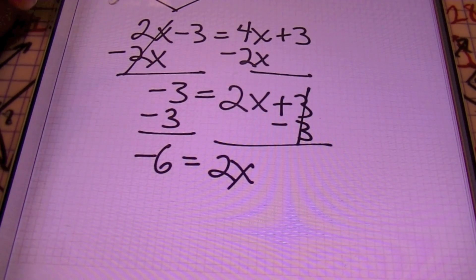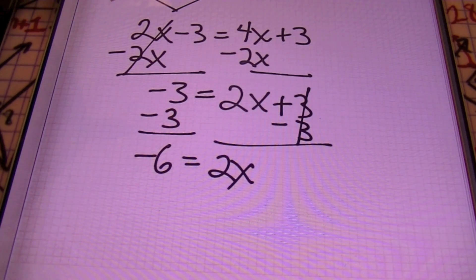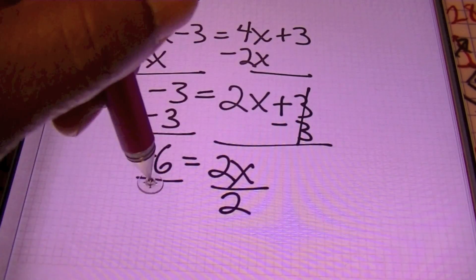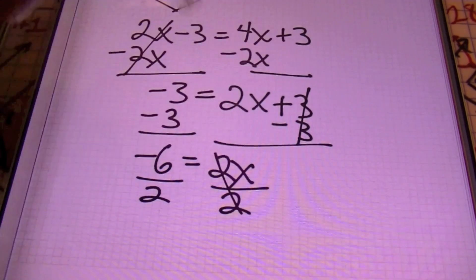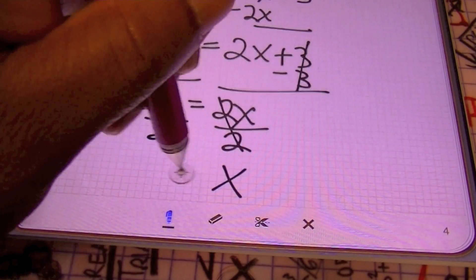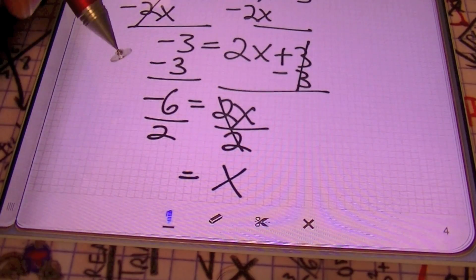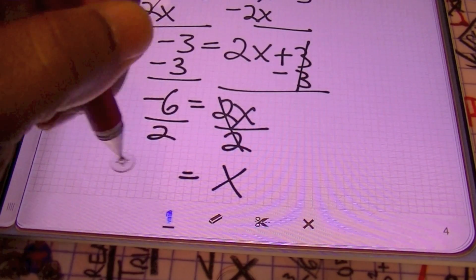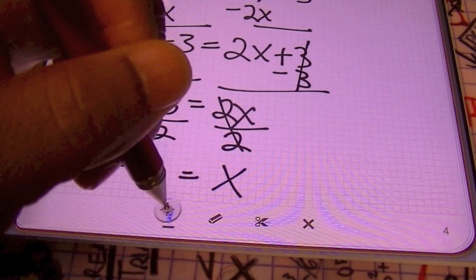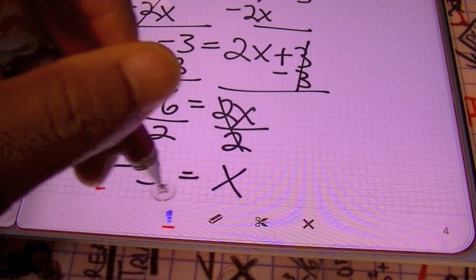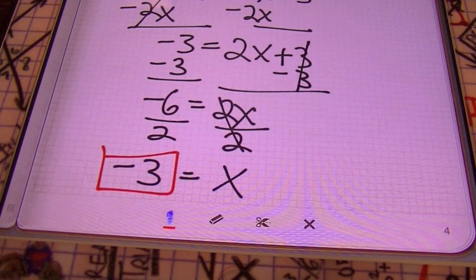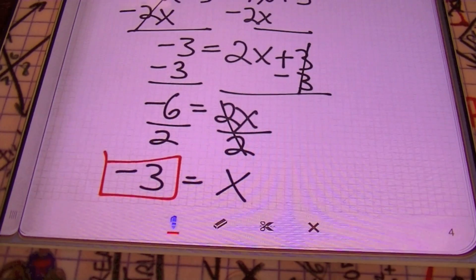I'm going to divide both sides by positive 2. And finally, ladies and gentlemen, X equals negative 6 divided by 2, which is negative 3. Done and done. Let's put a box around that. That's problem 4.